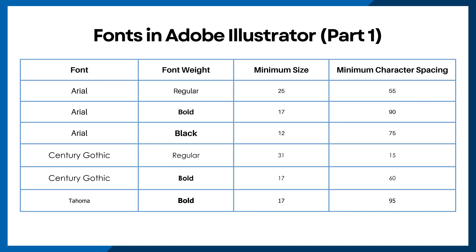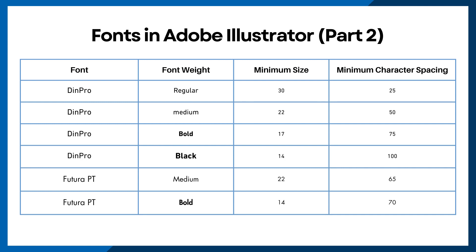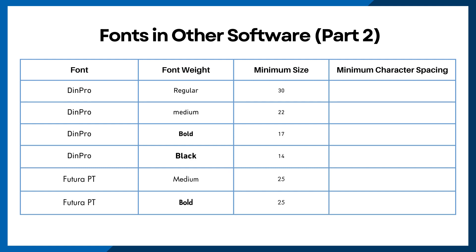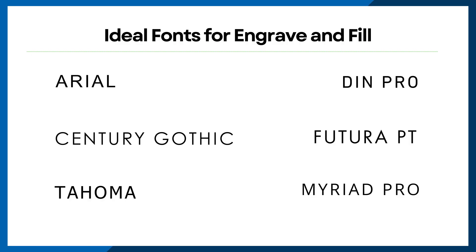Here are the recommended minimum font sizes for different fonts in Adobe Illustrator. When we take a look at the font constraints for other software, you'll notice that there isn't a minimum number for character spacing. If you use SolidWorks, it's important to note that tracking can be adjusted in the software. You may have noticed that our charts highlighted only a few select fonts — these are fonts that have proven to deliver good results. If you submit a file in an alternative font, we'll convert it into one of these options. In instances where the font is unspecified, Arial Black will be selected as the default.